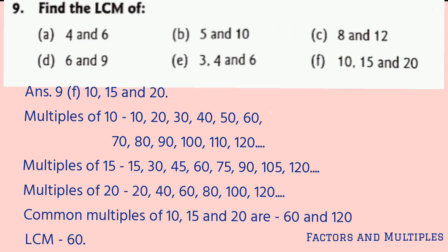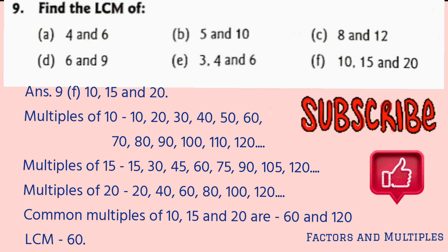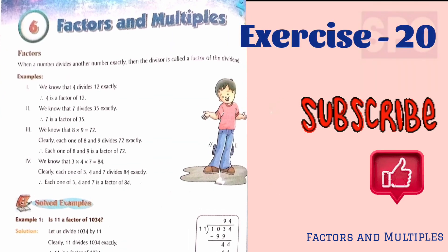Part f: 10, 15, and 20. After writing the multiples of 10, 15, and 20, we get 60 and 120 as the first 2 common multiples of these 3 numbers. Out of these, 60 is the LCM of 10, 15, and 20.